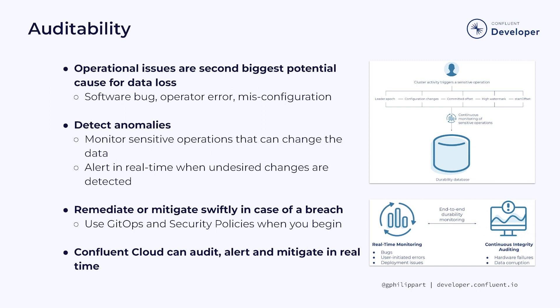You should alert in real time when undesired changes are detected. When you detect an anomaly, it's crucial to be able to swiftly remediate or at least mitigate the problem. If you're using Apache Kafka, using GitOps and security policies with ACLs can be a good start to reduce the risk. But it relies only on human expertise. As you evolve and grow the platform, many changes will be made by an increasing number of developers or operators, and inconsistencies across hundreds of configuration points may become much more difficult to spot. Confluent has leveraged its operational experience to build a very robust audit, alert, and mitigation mechanism which can analyze all sensitive operations in real time.